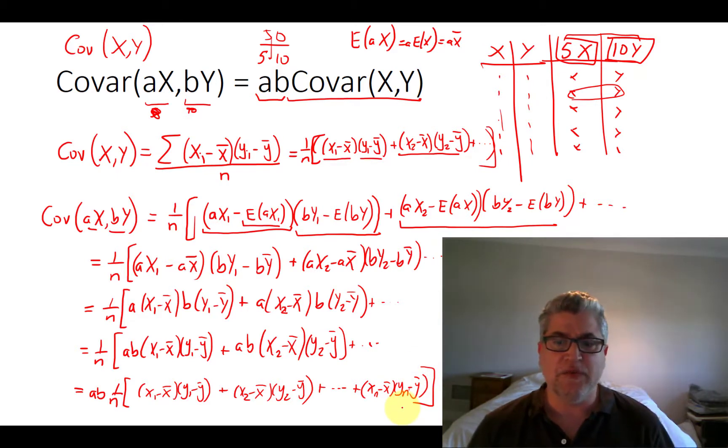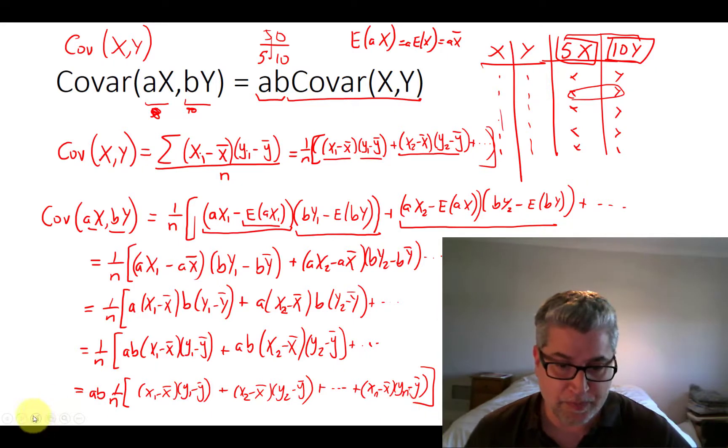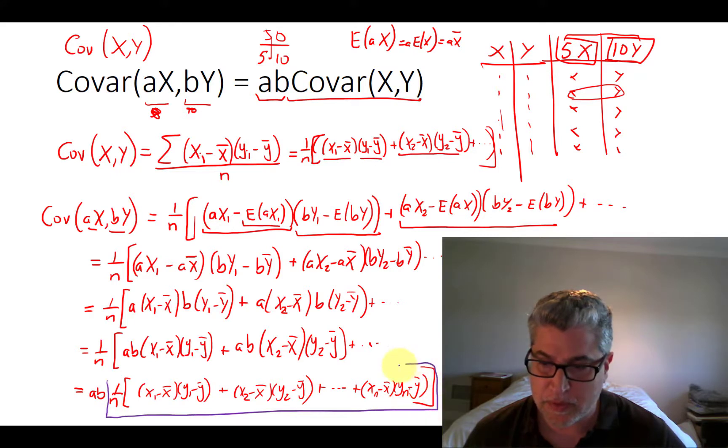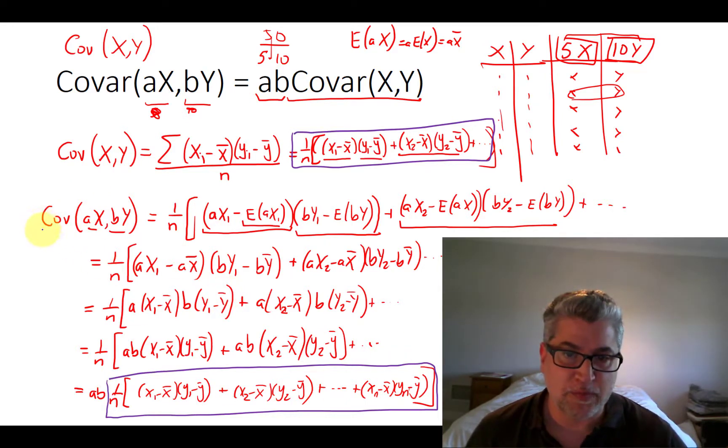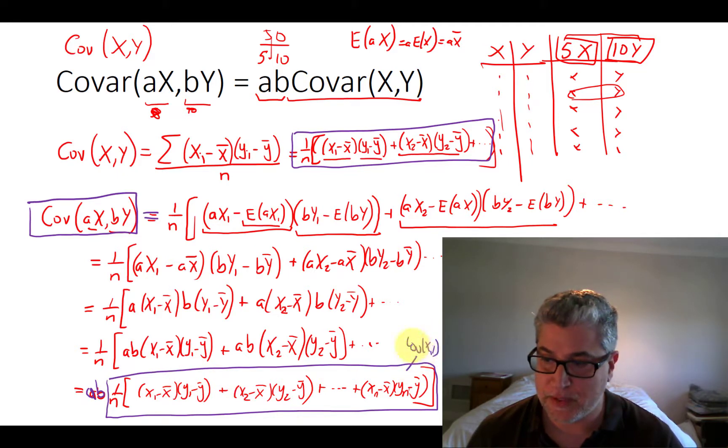But holy moly, if that doesn't look familiar. It should look familiar. Notice that this term here is equal to this term right here. That's equal to the covariance of X and Y. So, we've just proven something here. We've just proven that the covariance of A, X, B, Y is equal to A, B times the covariance of X, Y. That's supposed to be covariance. So we've just proven what we need to prove.